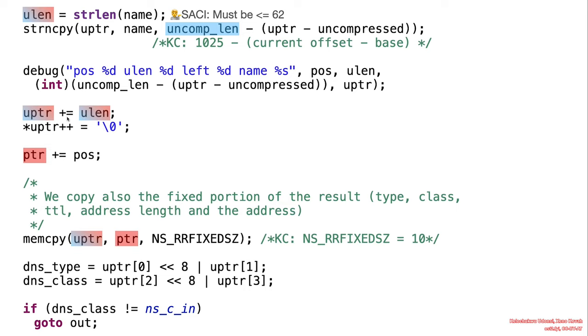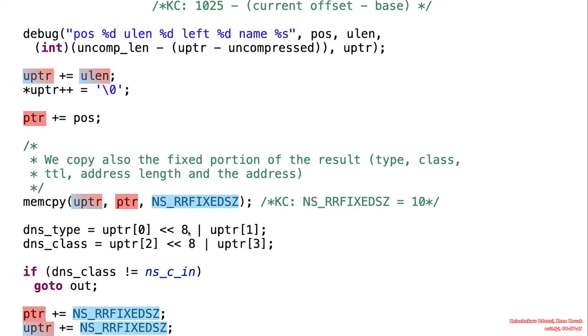Okay, and then it advances the pointer by ulen bytes, so the number of bytes is written, and then it puts in a null byte. And then it comes down further down here to actually copy in now the rest of that metadata, like the type, the class, the TTL, address length and all of that stuff. But it does it with a fixed size. And the value of that fixed size is 10 bytes.